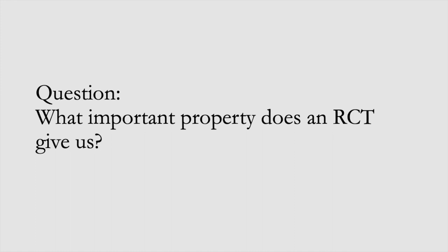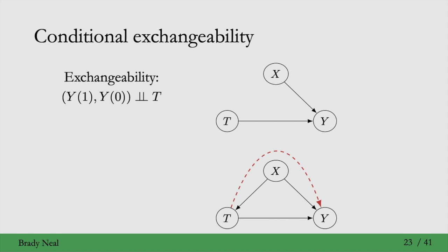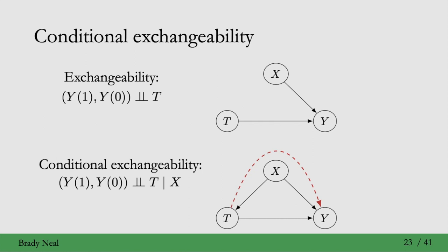This brings us to our next recall question: what important property does an RCT give us? We just saw the exchangeability assumption and how it allows us to identify the causal effect. However, exchangeability assumes a causal graph with no confounding. We're often interested in settings where there is confounding — where X is a common cause of both T and Y. In this setting, we have conditional exchangeability: the potential outcomes Y(1) and Y(0) are independent of T conditional on X. Graphically, conditioning on X blocks the confounding.